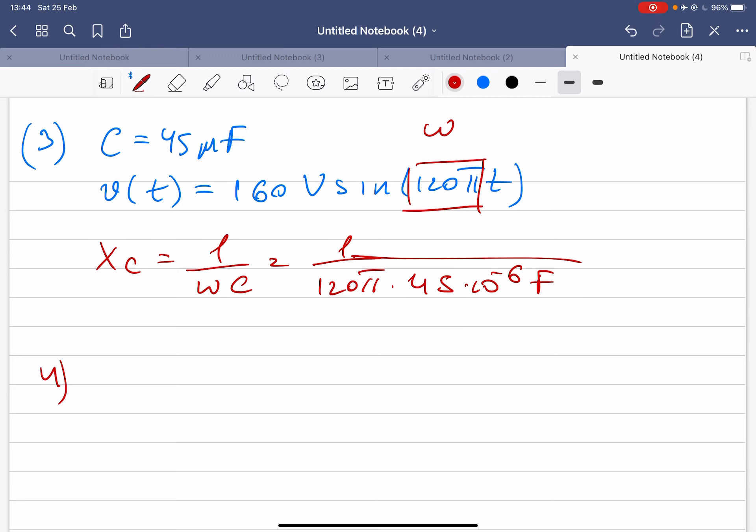The inductor is given, which is L equals 250 millihenry. The voltage is varying over time, which is 160 volts sine 120 pi t. And as you know, this 120 pi is omega.